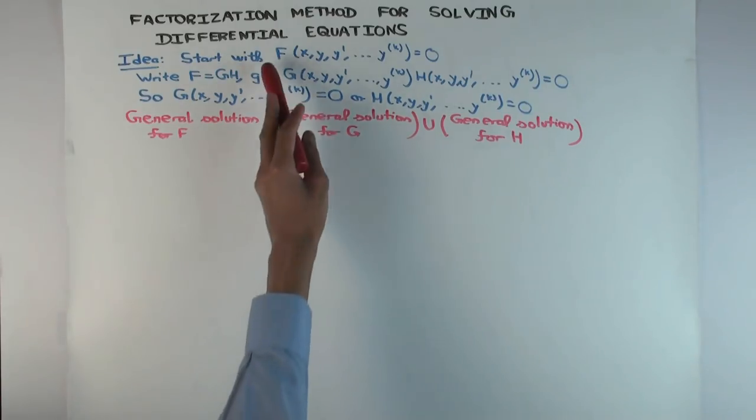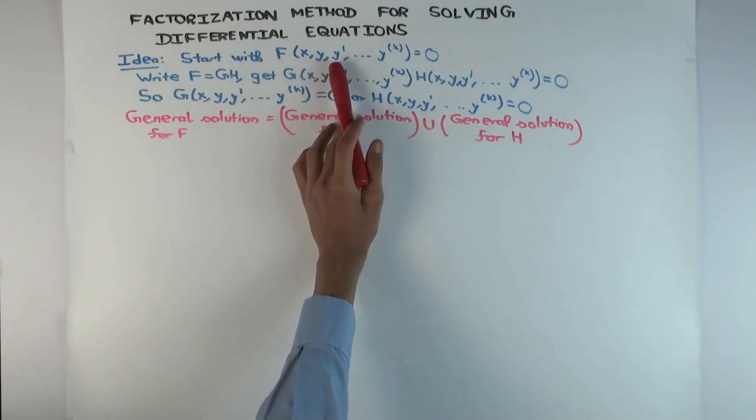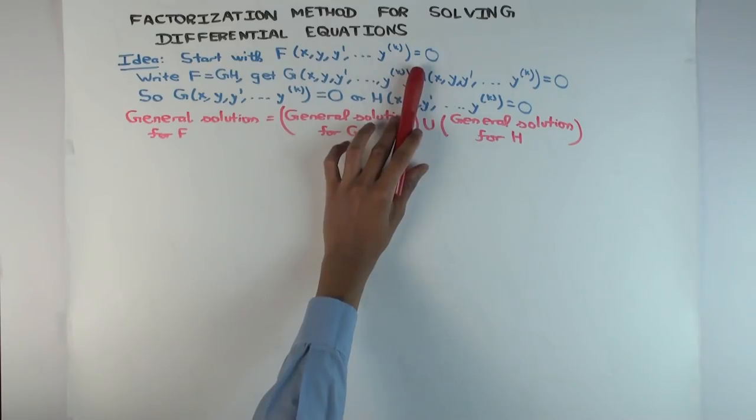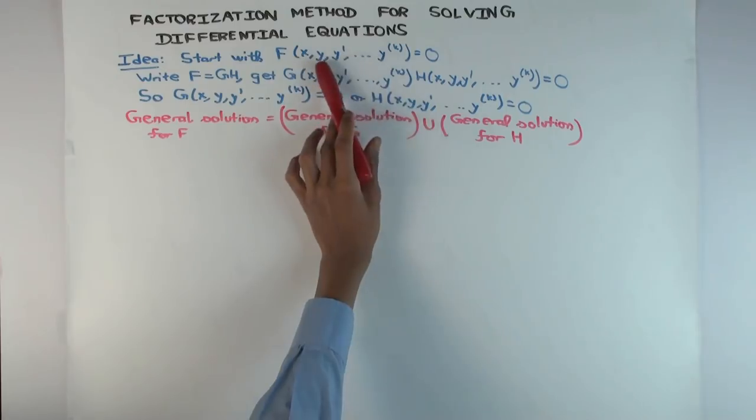So the idea is like this: you have a differential equation, which means F is an expression involving x, the independent variable, y the dependent variable, and the derivatives of y with respect to x. It's just saying some expression in these is zero, and when you plug this in you'll get zero.